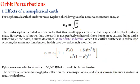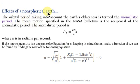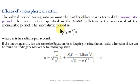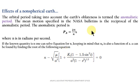The orbital period taking into account Earth's oblateness is termed the anomalistic period. Earlier we considered earth as a perfect sphere; with oblateness factored in, the anomalistic period Pₐ can be denoted as 2π/n seconds, where n is in radians per second. If n is known, one can solve this using n = √(μ/a³) substituted with the previous correction equation. This is the effect of non-spherical Earth.